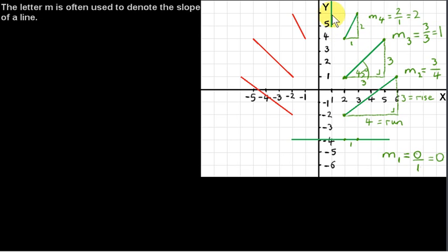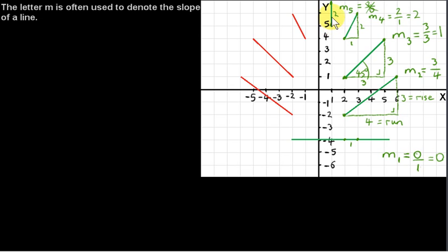The most extreme situation is a line that is vertical. We will call the slope of this line M5. To get its slope, we pick two points on it — say the two endpoints. The rise, or vertical distance between these two points, is two. But the run — the horizontal distance between these two points — is zero. So we have two divided by zero. This is not defined; you could call it infinite if you like, but we can't divide any number by zero. We don't really give a value to the slope of a vertical line.